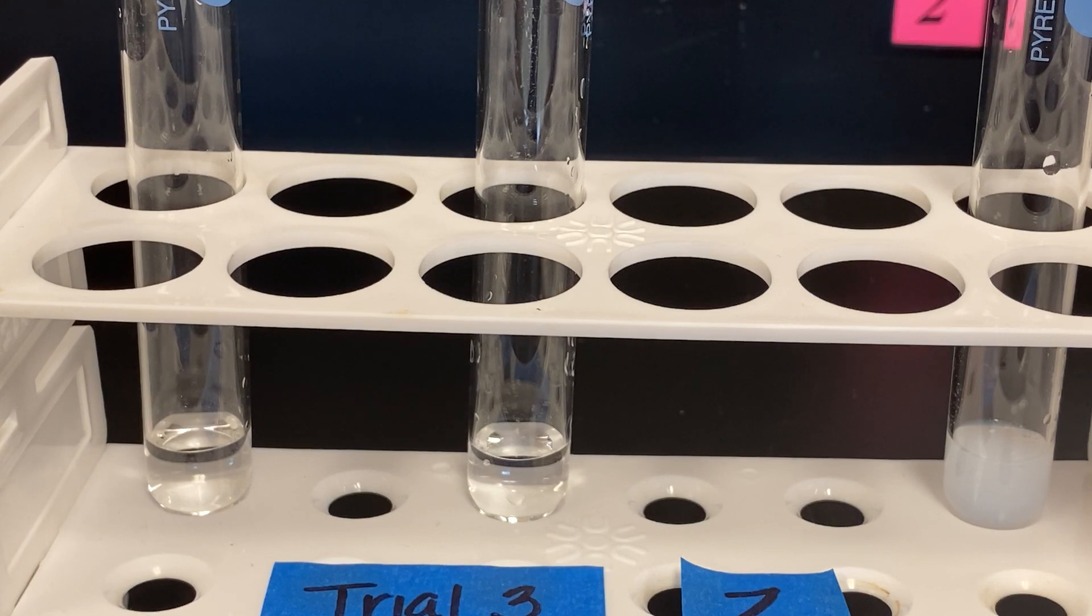Once you conduct the experiment, ensure that you are listing every step taken in each trial. For example, for trial 1, each tube was filled with 1 ml of an unknown liquid solution, X. Test tube 2 was filled with an unknown solution, X. Test tube 3 was mixed with unknown solution, X.